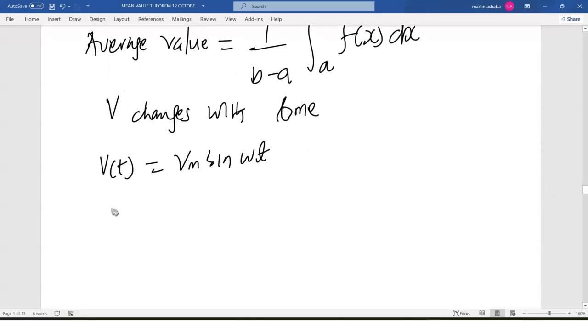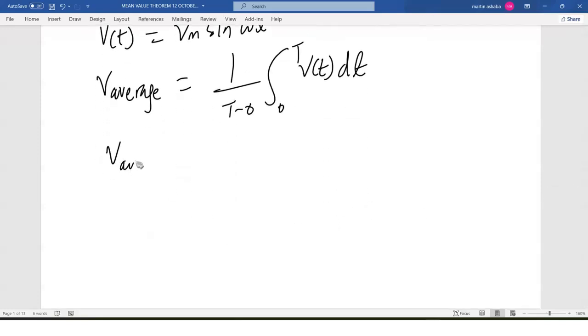So V_average shall equal to 1 out of T. So from a to b, we are talking about the period of this function. The period is T and is starting from 0. So it will be T minus 0, integrating from 0 to T of V(t) with respect to t. But what is V(t)? So V_average will equal to 1 out of T,